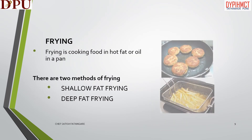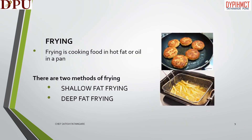In this slide we will learn about frying. Frying is cooking food in hot fat or oil in a pan. There are two methods of frying. Shallow fat frying: foods are cooked in a small amount of fat or oil, with the level of fat anywhere from halfway up the side of the food. Deep fat frying involves the complete immersion of food in hot fat or oil.